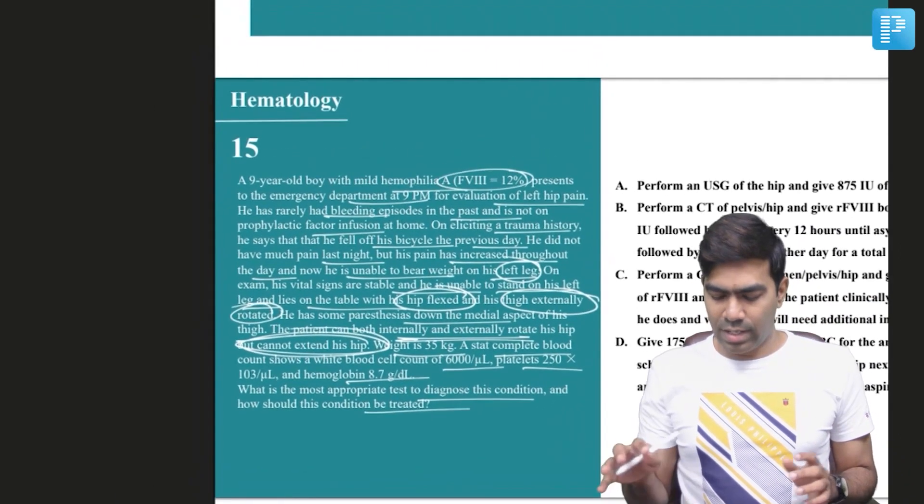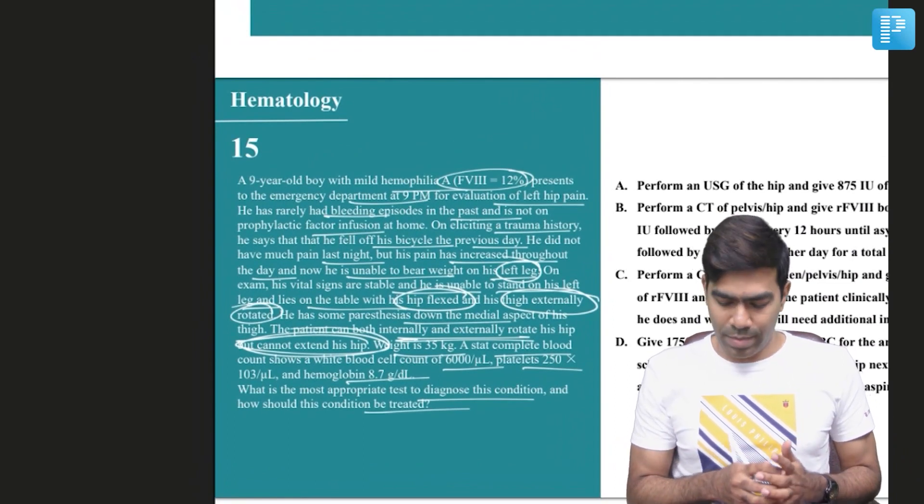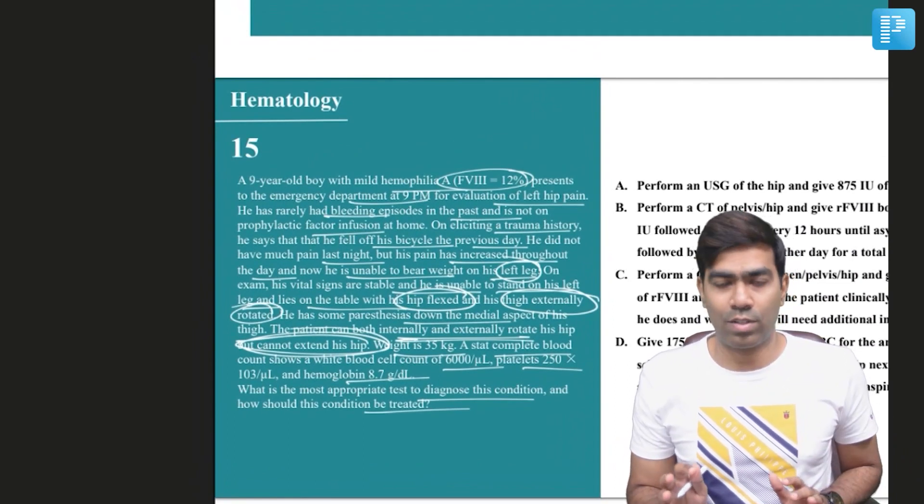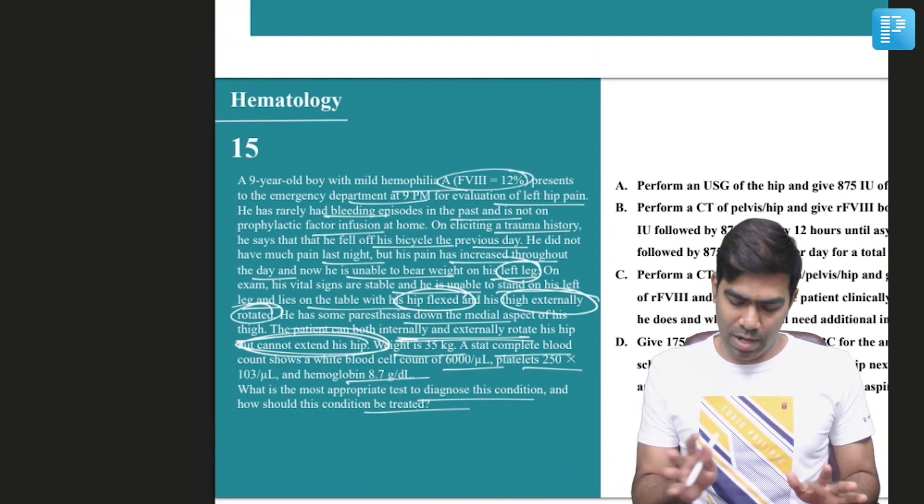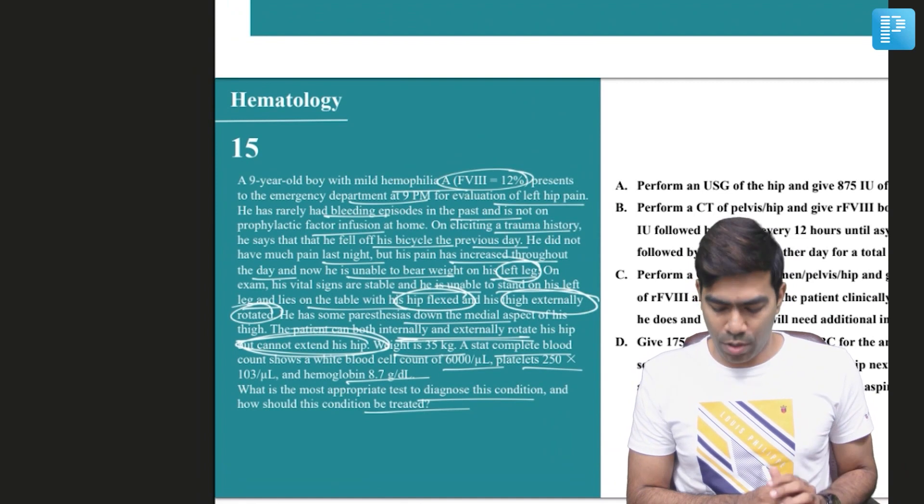Remember, first of all you might think it's a hip hemarthrosis, hip joint hemarthrosis, but this is not a hip joint hemarthrosis because the patient can both internally as well as externally rotate the hip. So it is extremely unlikely in a patient with a hip joint problem.